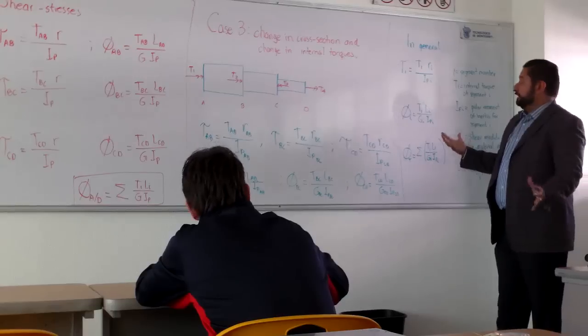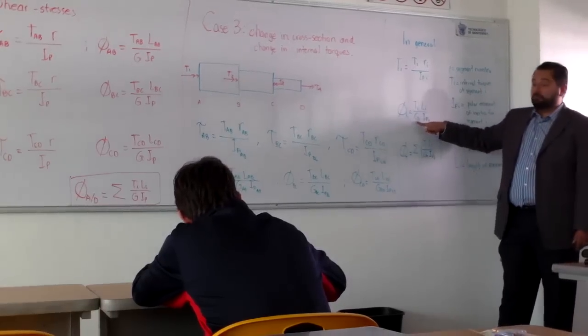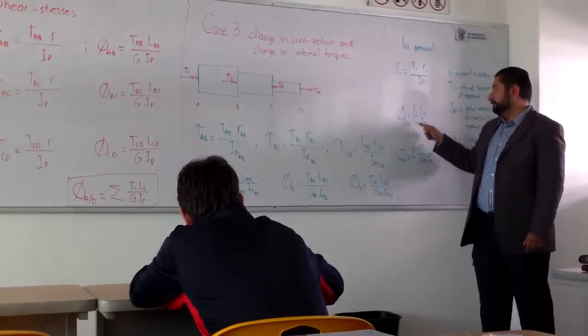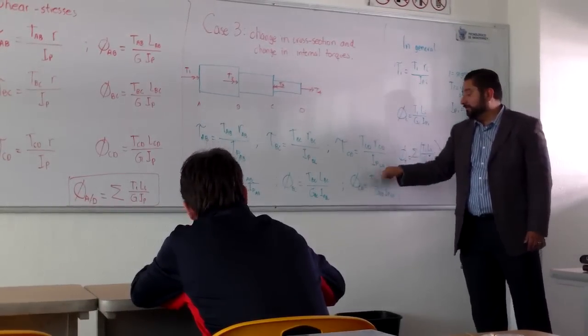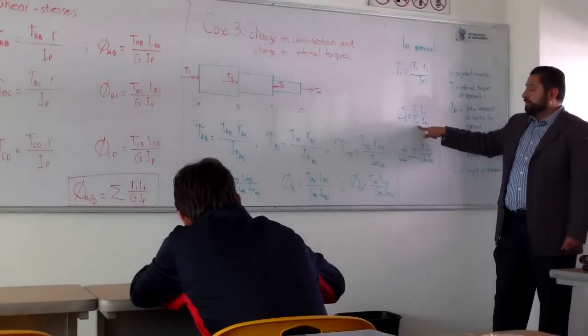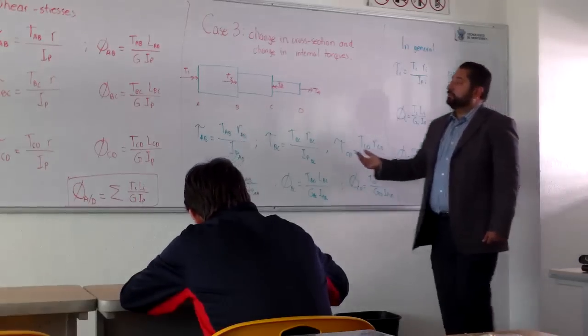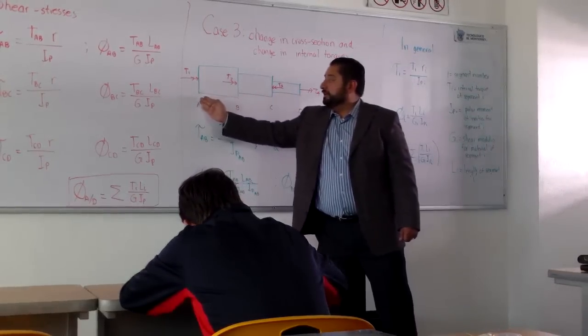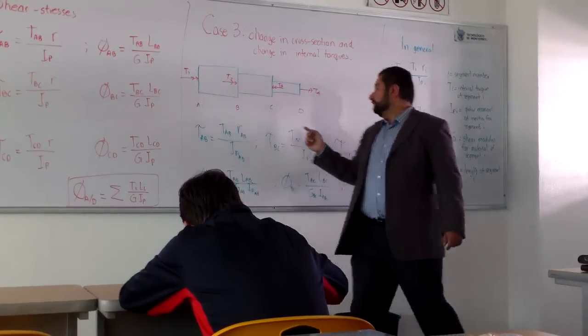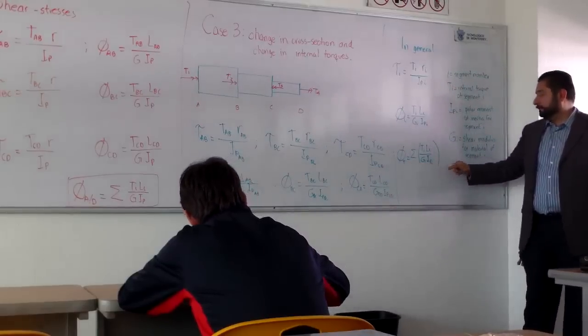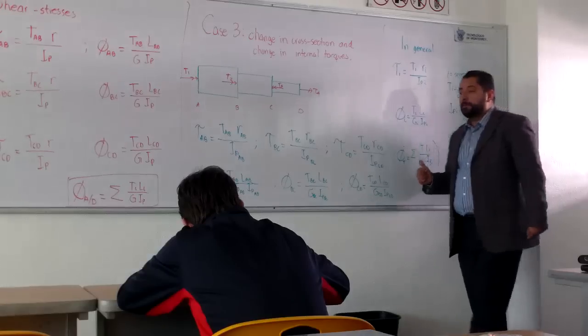You might even have a combination of materials and G, that is, the shear modulus used to calculate the angle of torsion might change as well. So use the appropriate value. And if you are asked to find what is the relative angle between D and A, you just apply this sum formula, this summation.